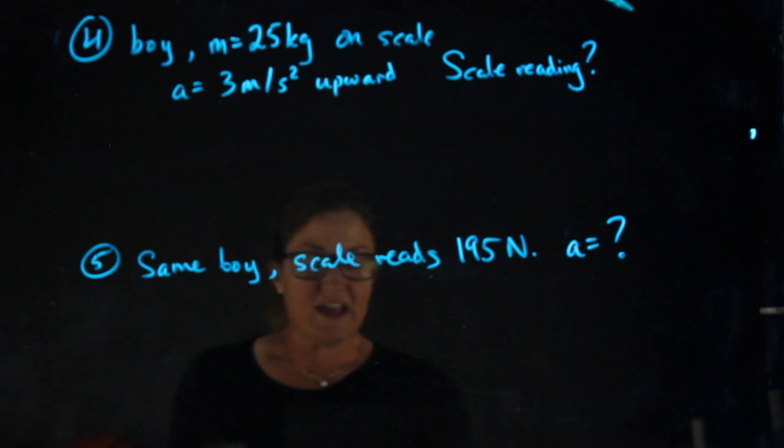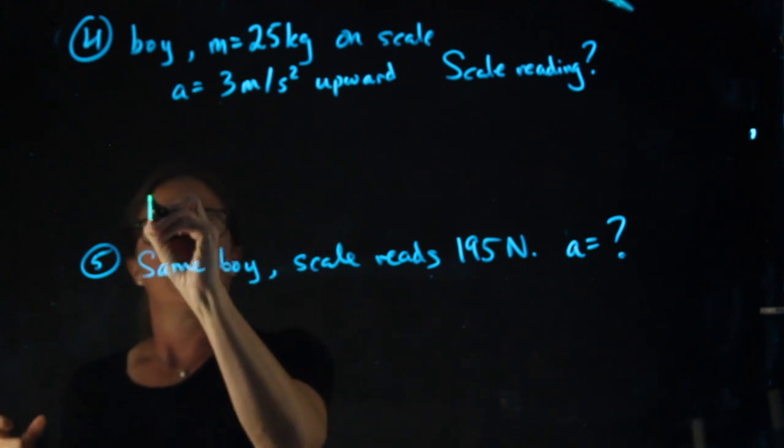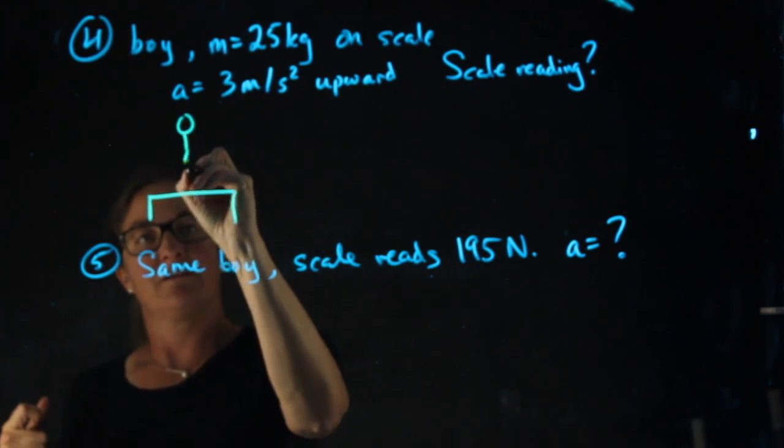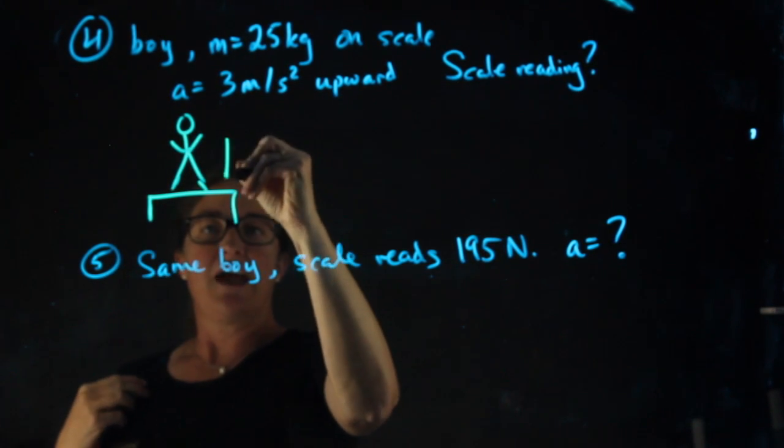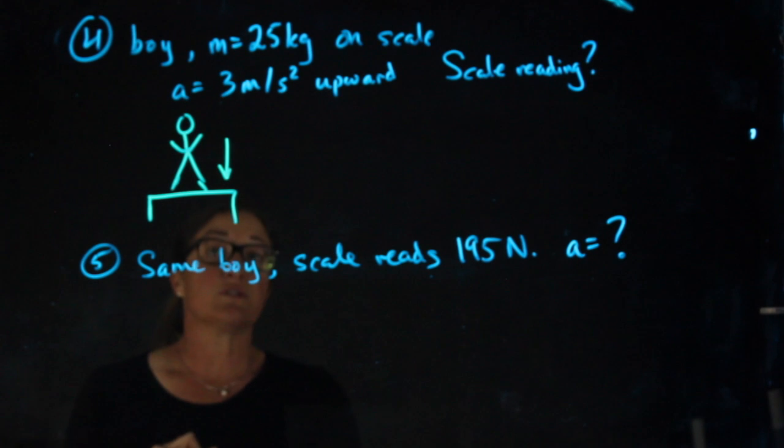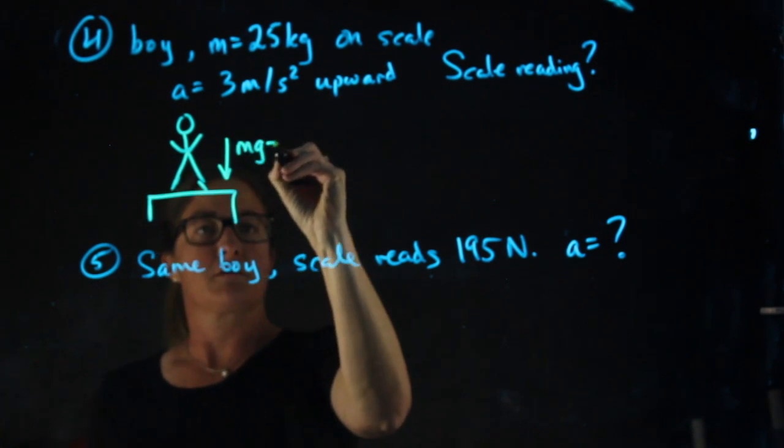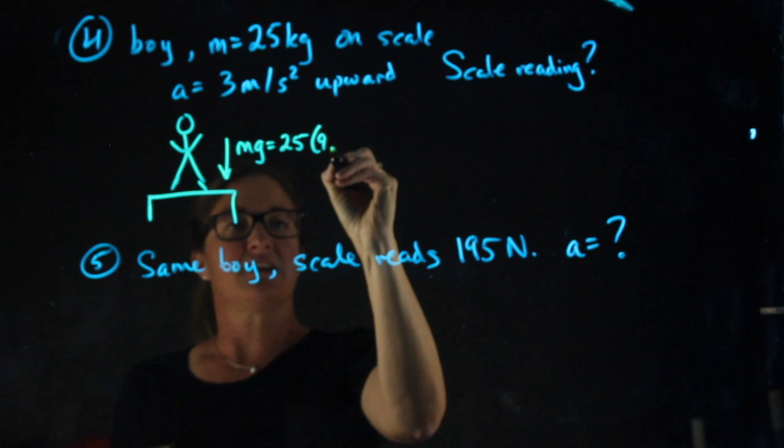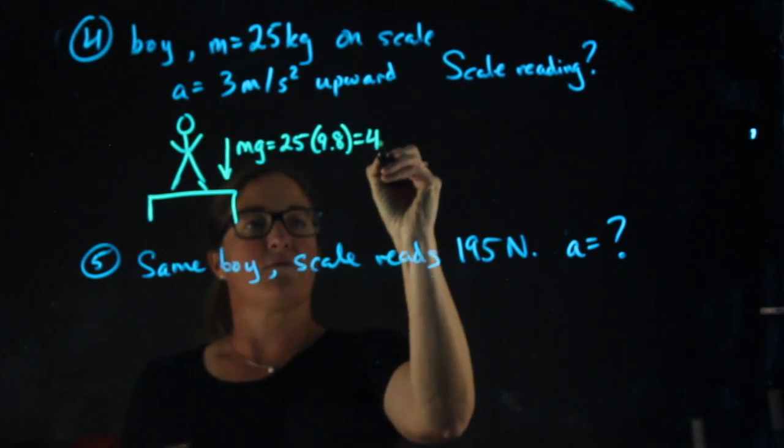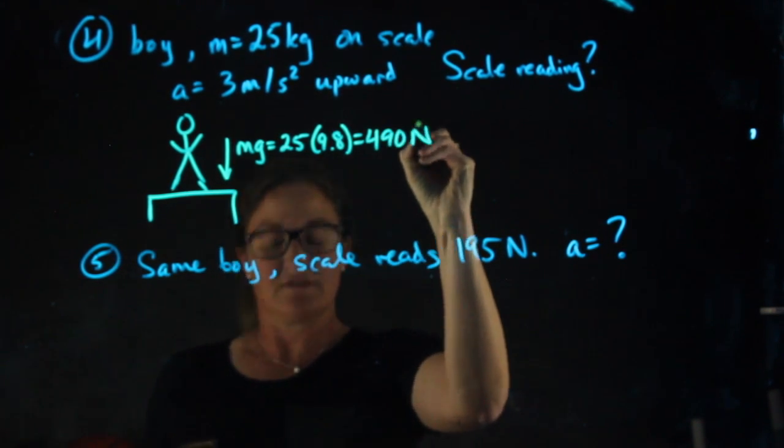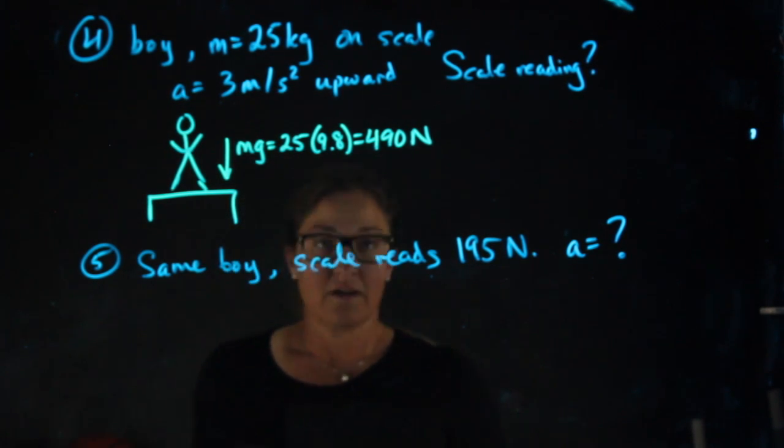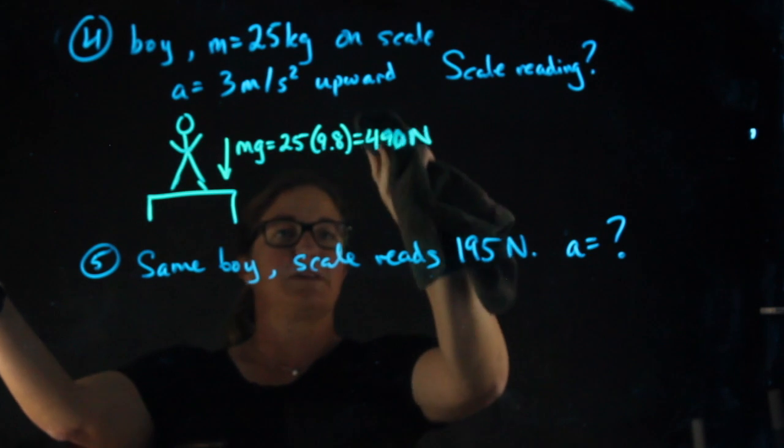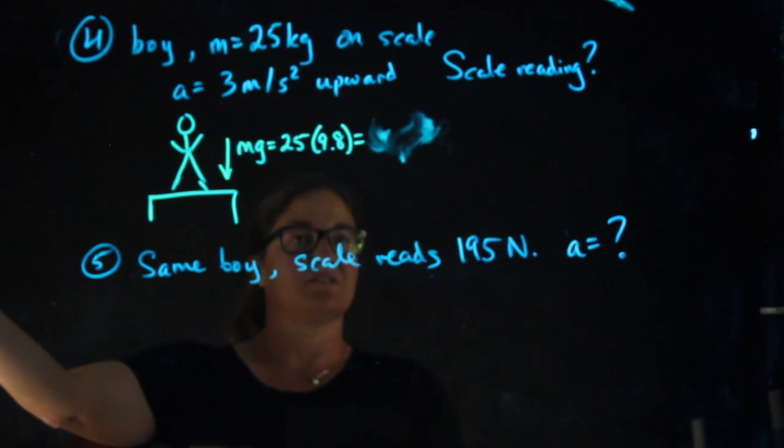The way I set up these drawings, I show my boy on the scale, and he has a downward force equal to mg, 25 times 9.8, which will equal 490 newtons. I believe... excuse me, 245 newtons.